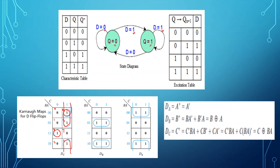With respect to the isolated 1, the term is C'BA. For the pair group, the term is A'C, giving DC = C XOR (A·B) after simplification. For DB, there are two groups with terms BA' and B'A, which simplifies to DB = B XOR A. For DA, there is a quad and the term corresponding to this quad is A', so DA = A' (which is equivalent to A XOR 1). These are the equations for the inputs DA, DB, and DC.